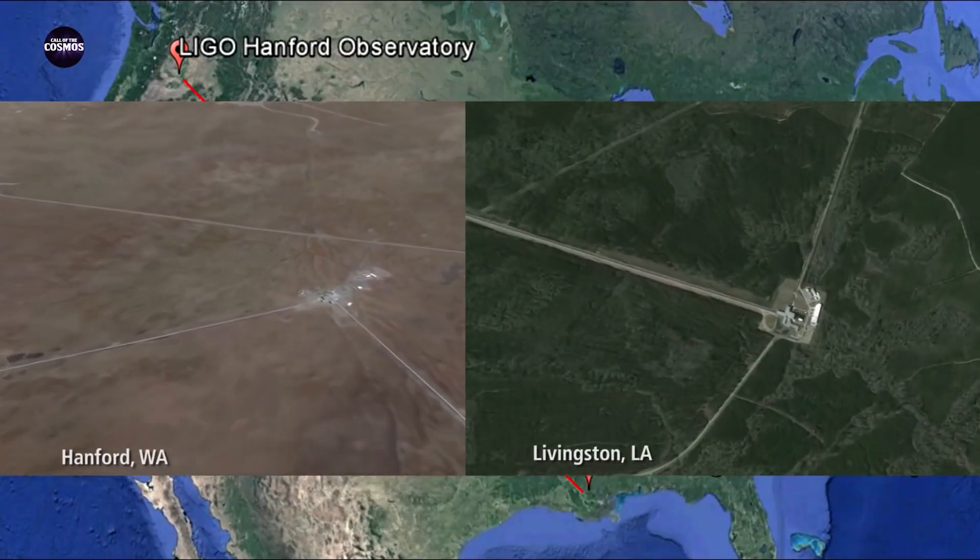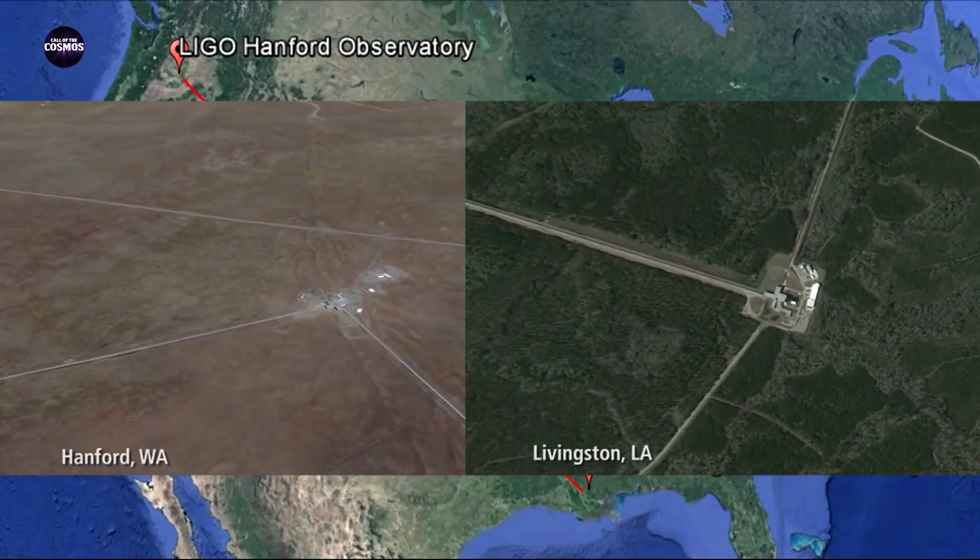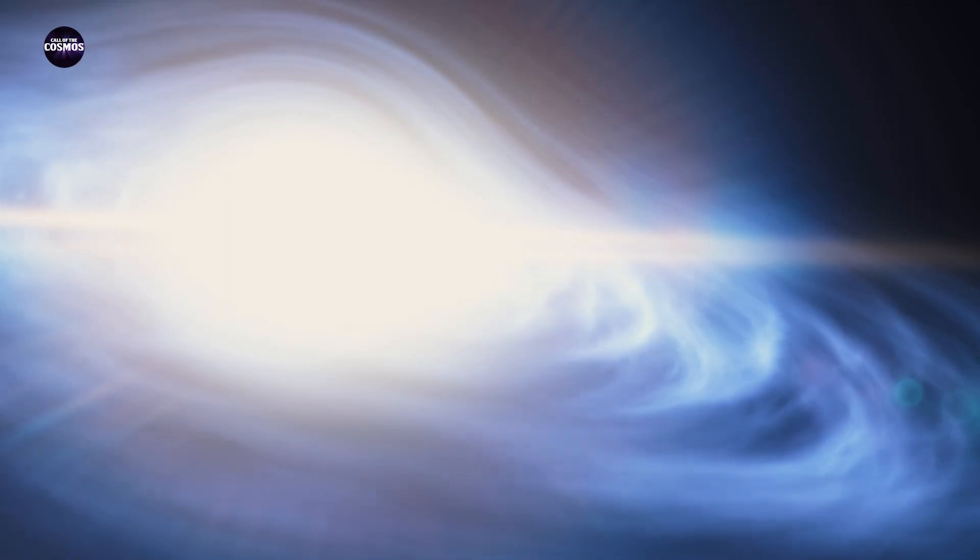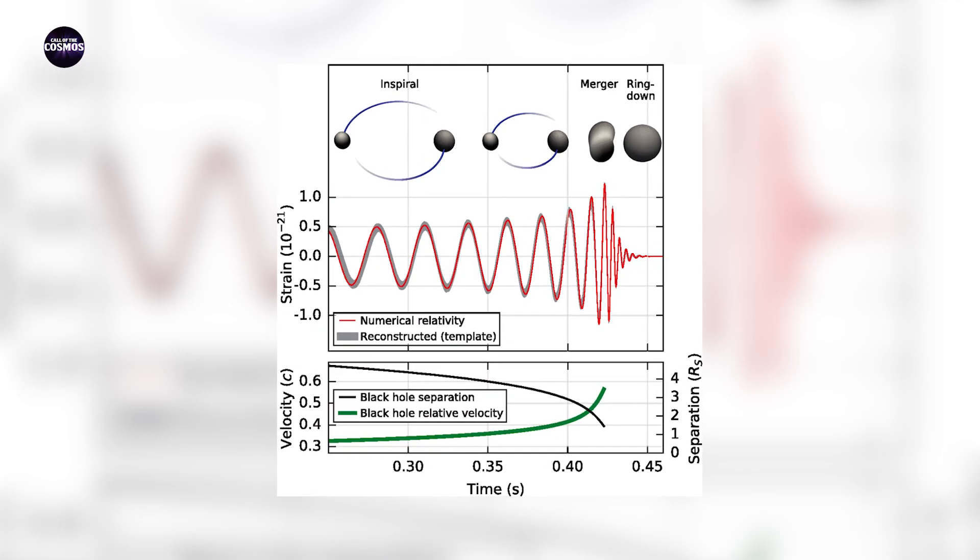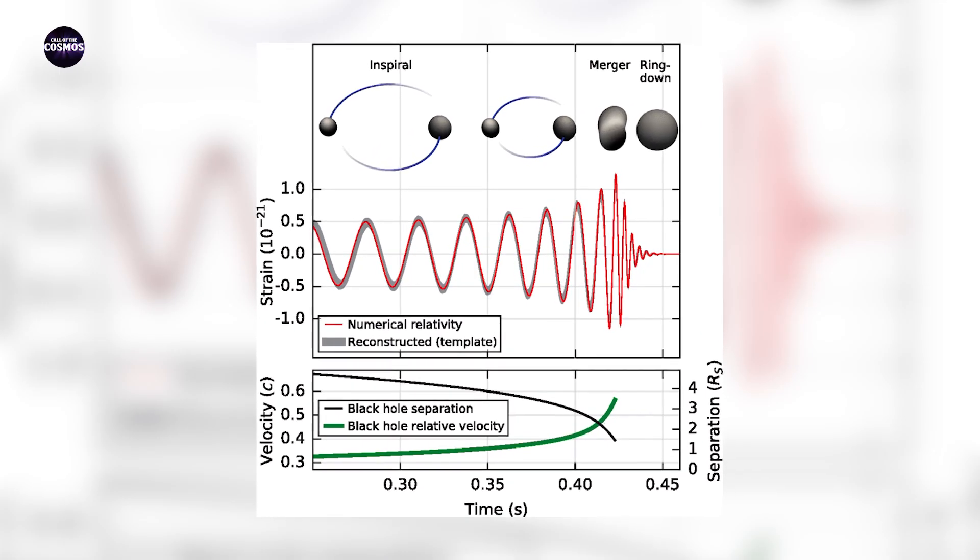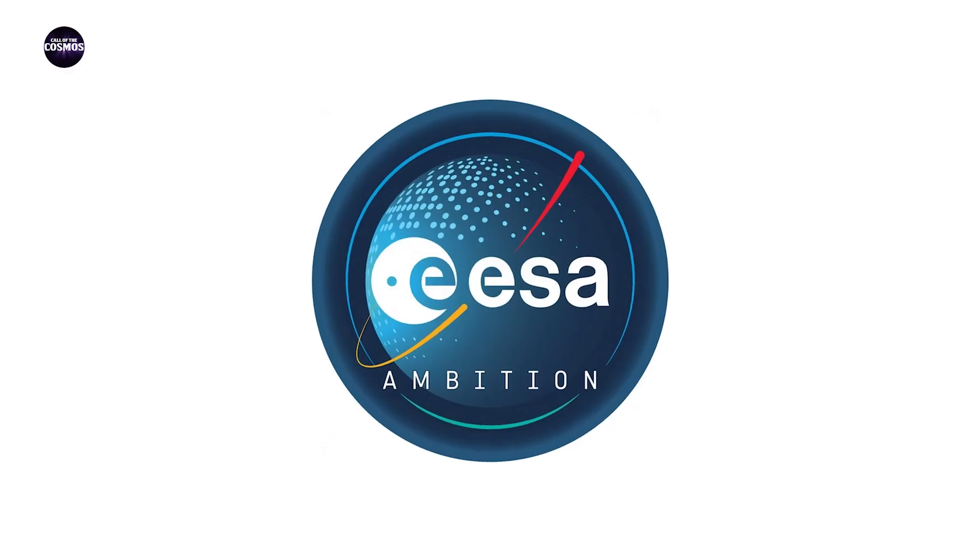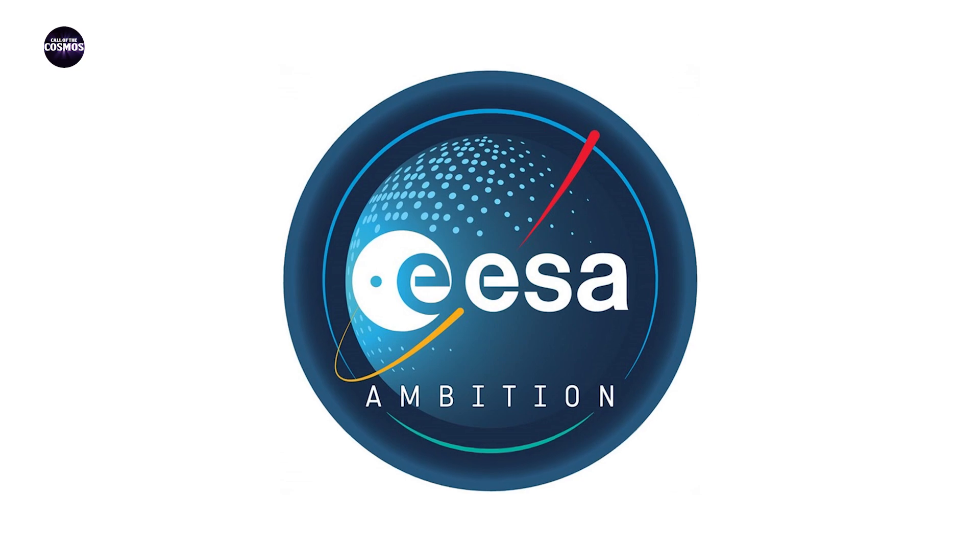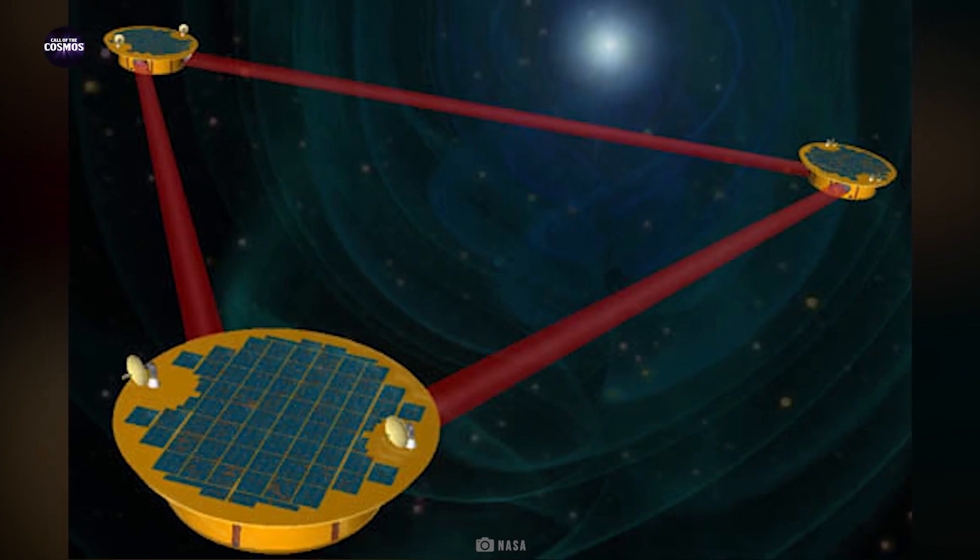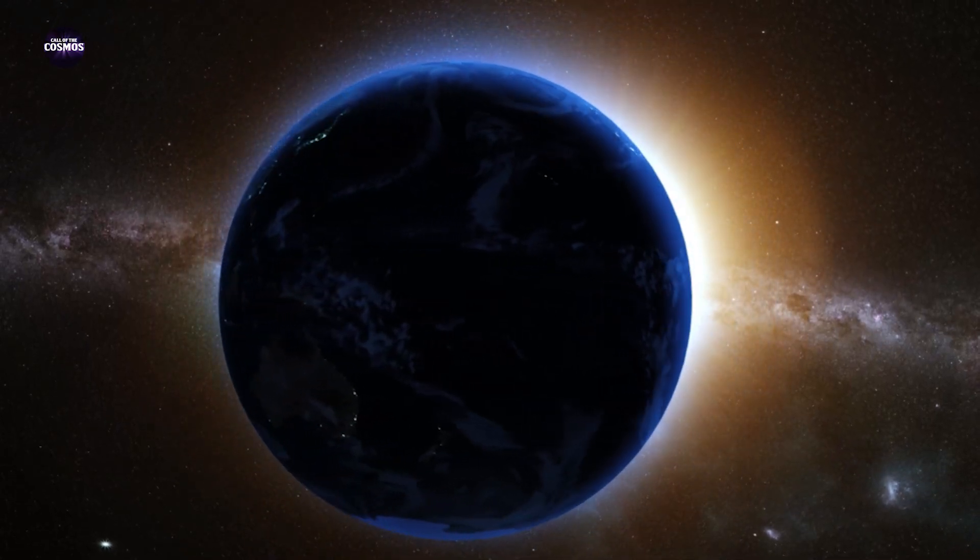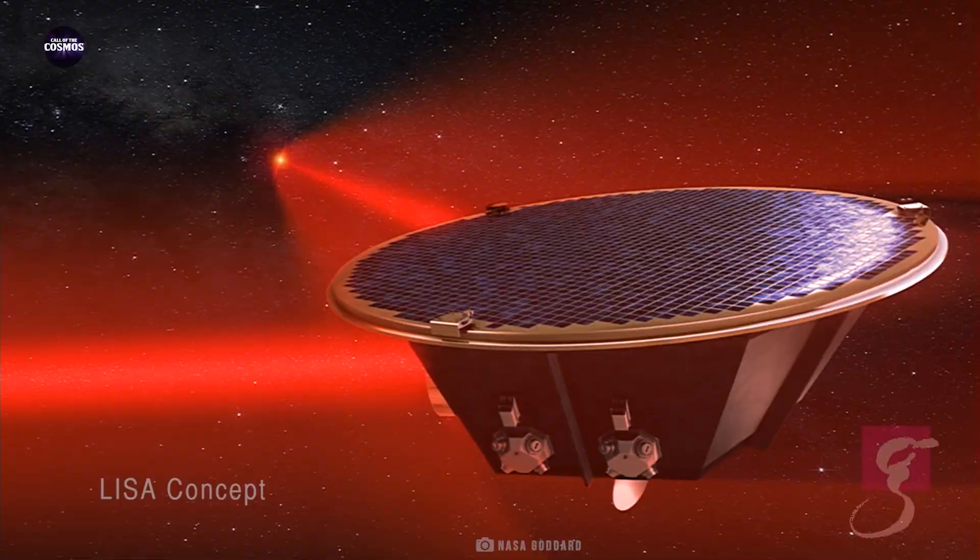While the Laser Interferometer Gravitational Wave Observatory, or LIGO, has helped us to see the mergers of smaller black holes, we have never observed the merger of two supermassive black holes. That is because the frequency of the gravitational waves generated by a supermassive black hole merger is lower than what LIGO is equipped to detect. Hence the European Space Agency is planning to launch a space-based gravitational wave detector called LISA, the Laser Interferometer Space Antenna to detect such mergers. It will orbit the Sun along with the Earth. As of now, its launch is scheduled in 2037.